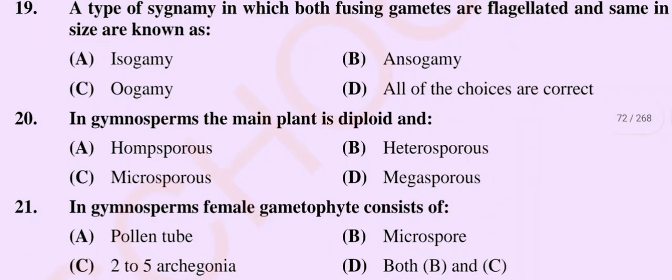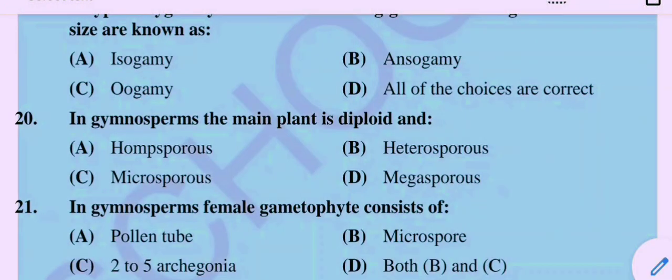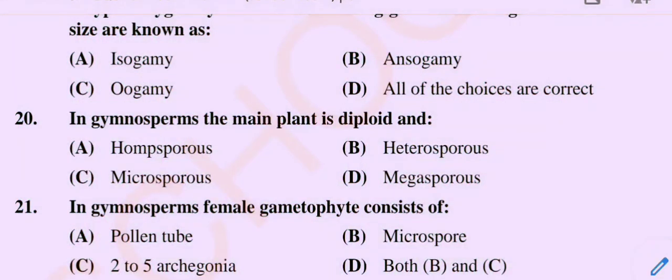Question number 20. In gymnosperms, the main plant is diploid and — Option A: Homosporous. Option B: Heterosporous. Option C: Microsporous. Option D: Megasporous.